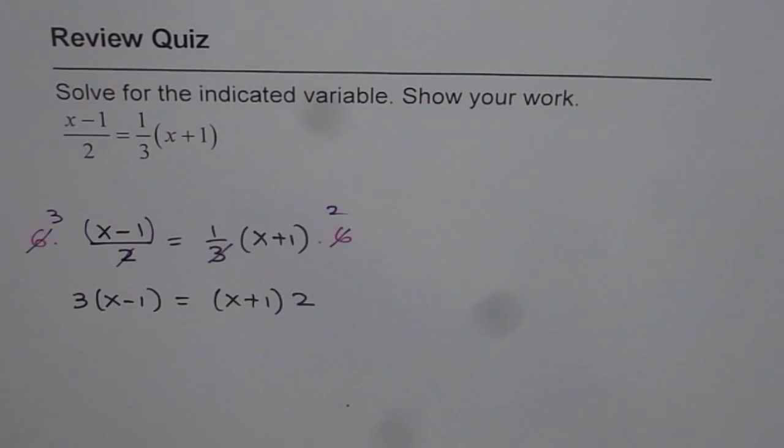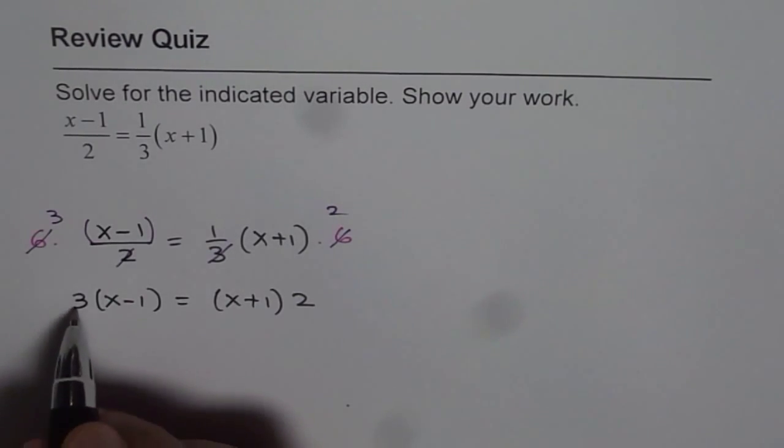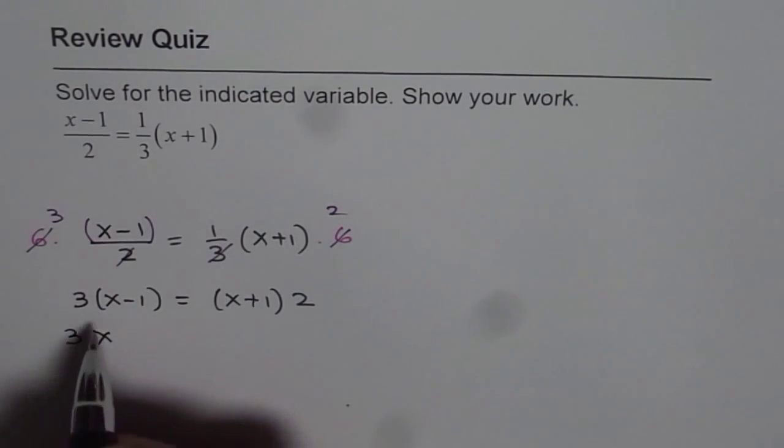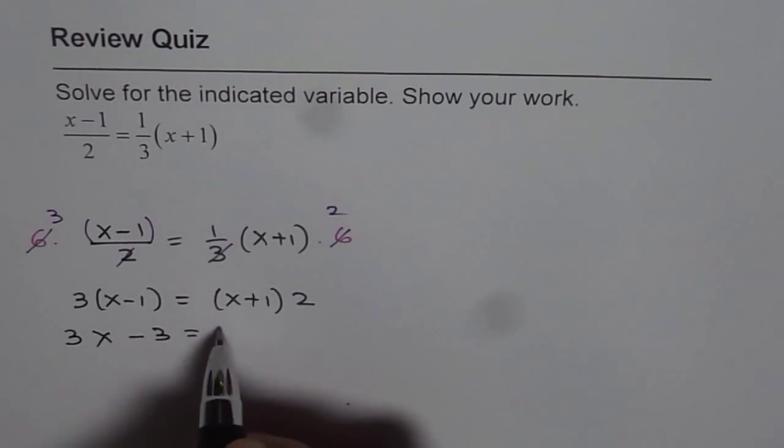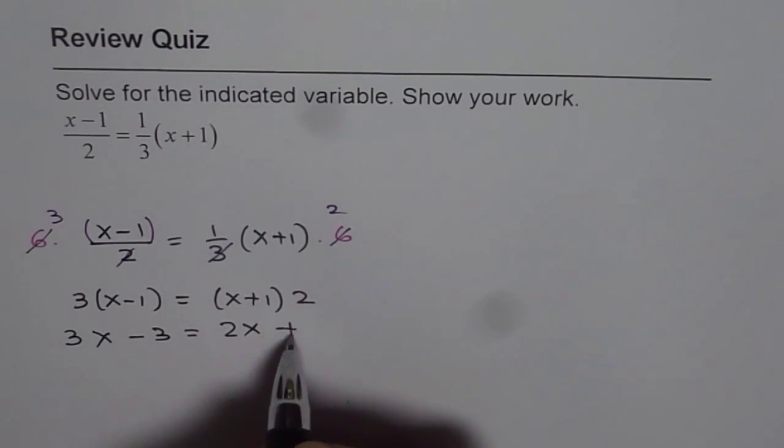Now let us apply the distributive property, expand and simplify. So we have 3 times x which is 3x minus 3 equals to 2x plus 2.